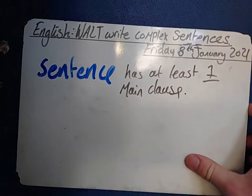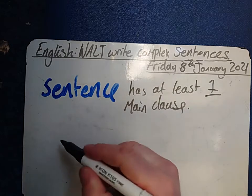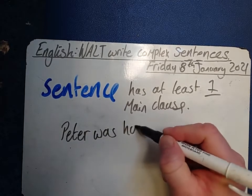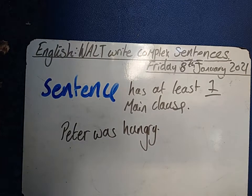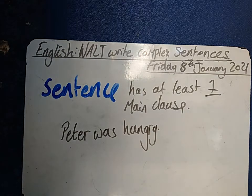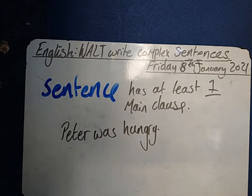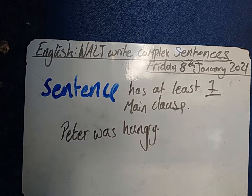Another way to think about that is every sentence has at least one thing which is the most important. So let's think of a nice example: Peter was hungry. It has a capital letter, it has a full stop, it's a complete sentence. It's a very boring sentence, but it's a sentence all the same. Remember, a sentence can be either a statement, a command, a question, or an exclamation. So every sentence has at least one clause. The clause here is 'Peter was hungry' — it's giving you some information.